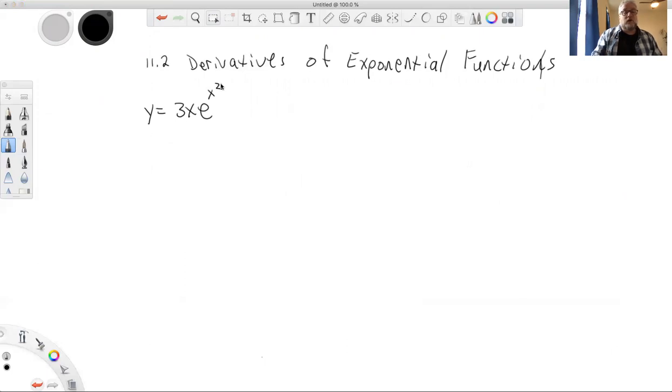y equals 3xe to the x squared. So I see this as a product rule problem because I have 3x multiplied into an exponential function. So I'm going to write this as the product rule says derivative of the first times the second, doesn't change, plus the first stays the same times the derivative of the second, which would be e to the x squared times the derivative of the group in the exponent, e to the u, and then du down here, 2x.